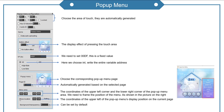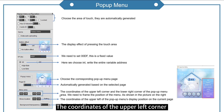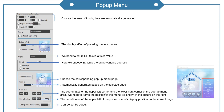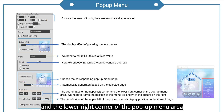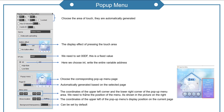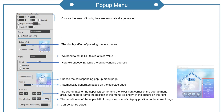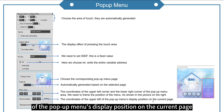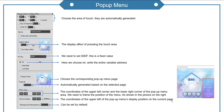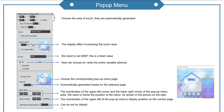Menu area: the coordinates of the upper left corner. In the lower right corner of the pop-up menu area, we need to frame the position of the menu. This part is the display menu area — show location — the coordinates of the upper left of the pop-up menu's display position on the current page. The last part can be set by default.